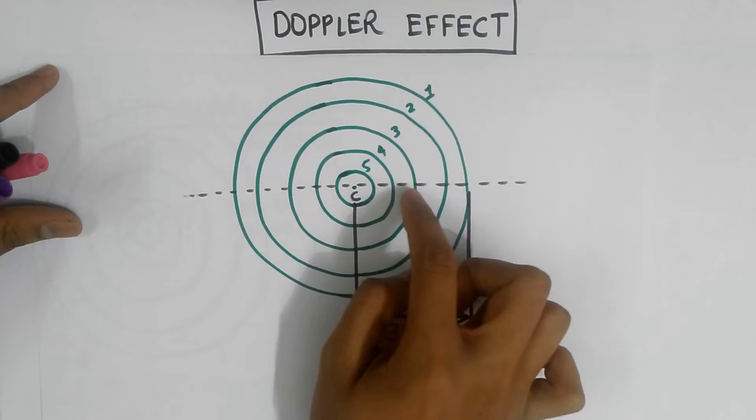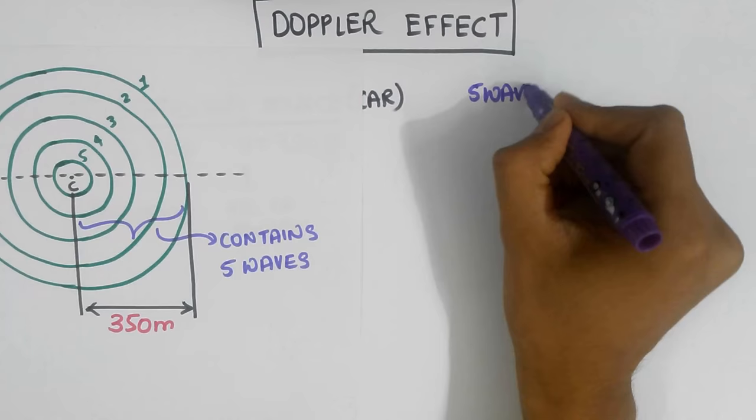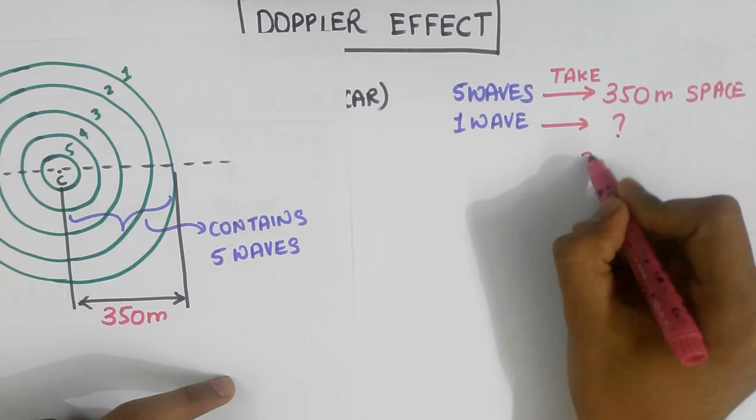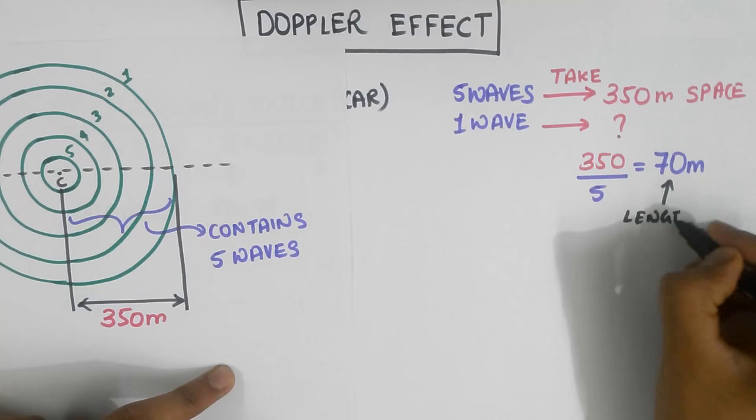And in this 350 meters, we have 5 waves. So 5 waves occupy a space of 350 meters. Thus, 1 wave would occupy a space of 350 divided by 5, which is 70 meters. And this space occupied by 1 wave is given a name, it's called the wavelength lambda.